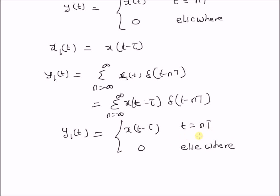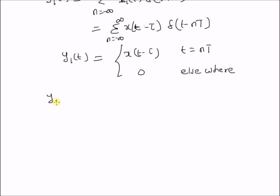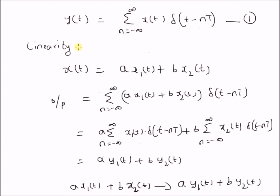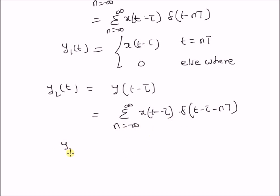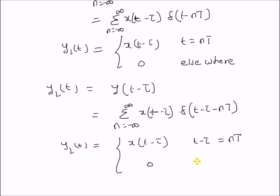Therefore, whenever t equals an integer multiple of T, the output y1(t) equals x(t minus tau), a delayed value of the original input x(t). Now consider y2(t) defined as y(t minus tau). By using equation 1, y(t minus tau) equals the sum from n equals minus infinity to plus infinity of x(t minus tau) multiplied by delta(t minus tau minus nT). Therefore, y2(t) equals x(t minus tau) only when t minus tau equals nT, or equivalently t equals tau plus nT, and 0 elsewhere.